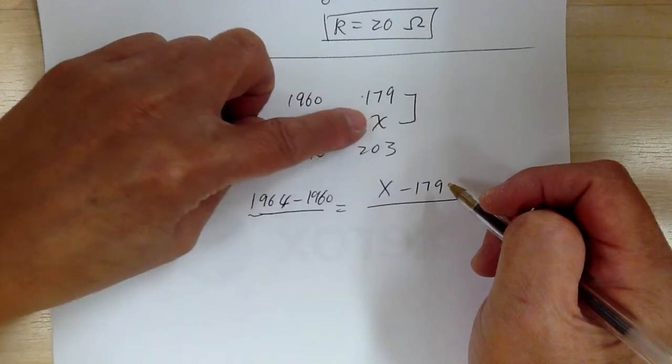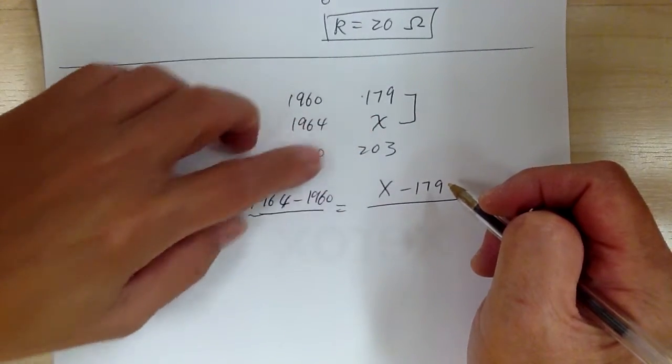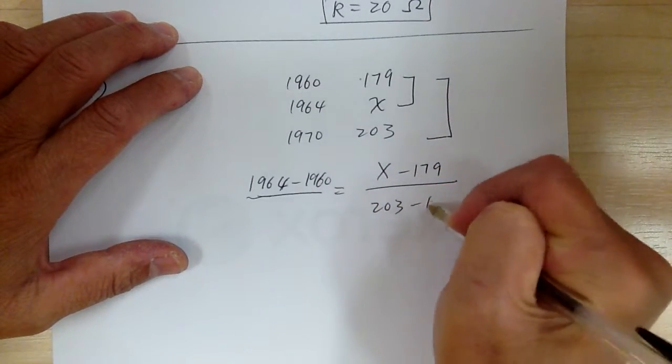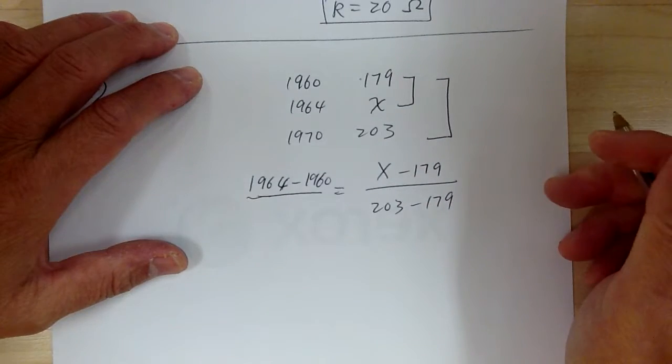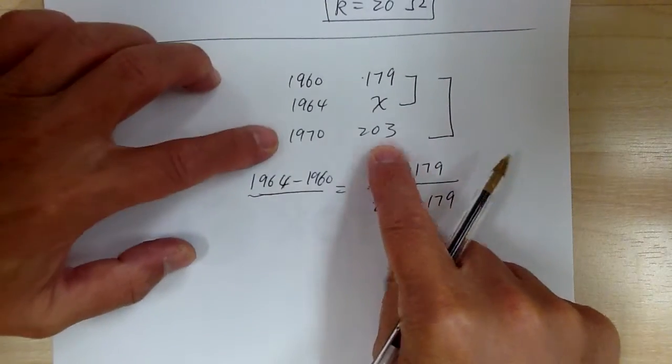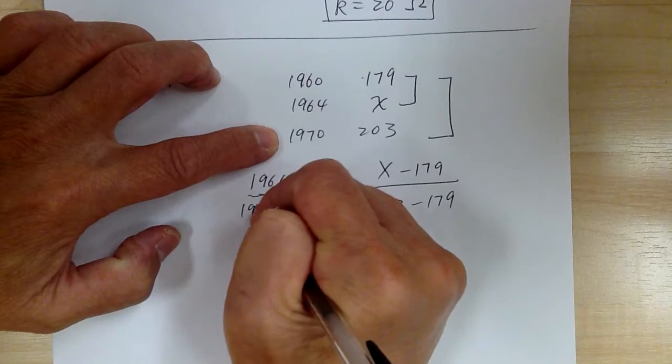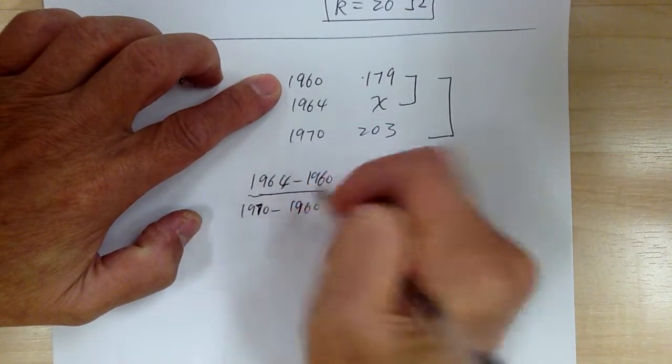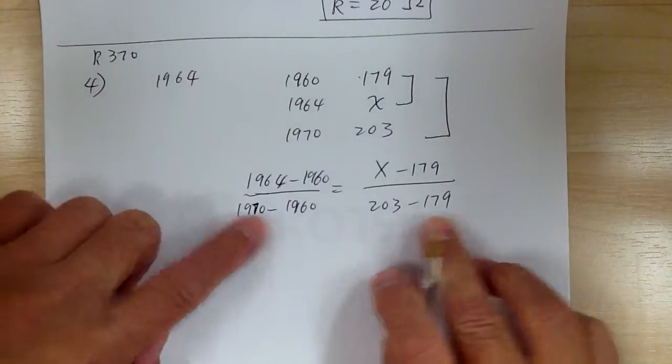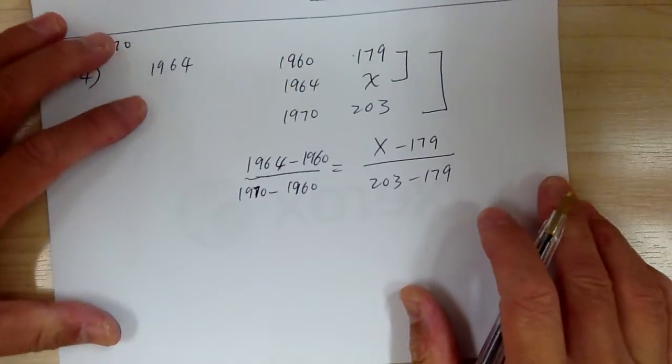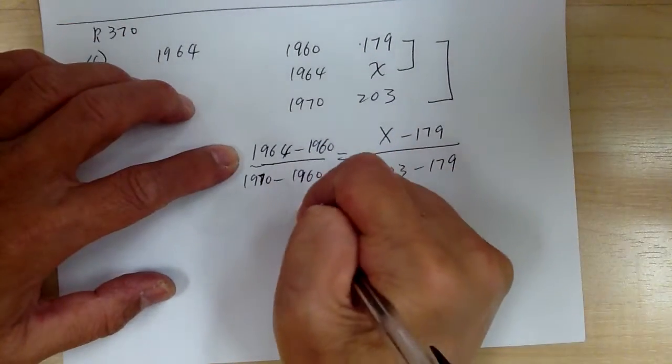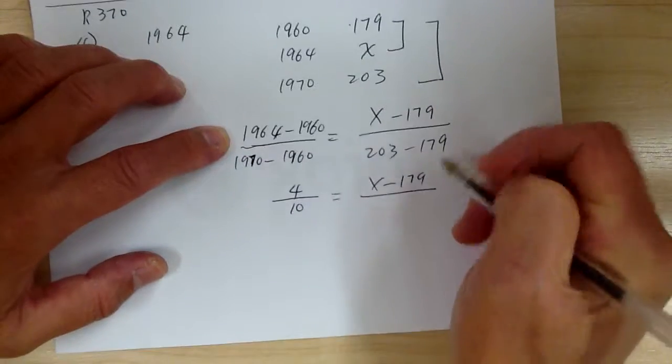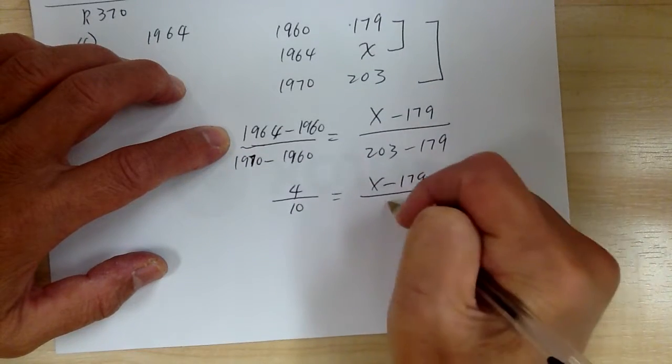And then you have to get another pair. Now, don't use the X again, because you end up with more than one variable. It's very difficult to solve. So go ahead and use this pair over here. So use 203 minus 179. Again, you can use any pair. And so 203 matches 1970 and 179 matches 1960. Again, you can write ratio any way you want as long as you match it up correspondingly. And then so from here, you can go and simplify. So you got 4 over 10 equal to X minus 179 over 24.